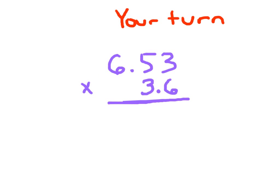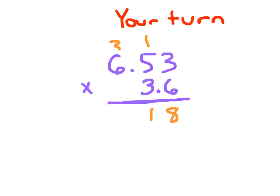We have 6 and 53 hundredths times 3 and 6 tenths — it's your turn to work this problem. Set it up and solve it, then hit pause. We ignore the decimal places: 653 times 36. For the first partial product, 6 times 3 is 18, 6 times 5 is 30 plus 1 is 31, 6 times 6 is... Did you get 3918? For the 3, which is worth 30, place the 0. 3 times 3 is 9, 3 times 5 is 15, write 5 and regroup the 1. 3 times 6 is 18, plus 1 is 19.